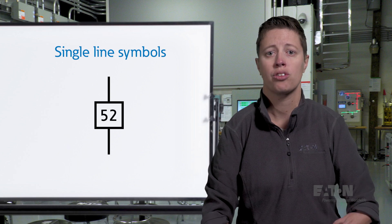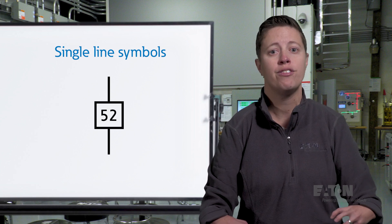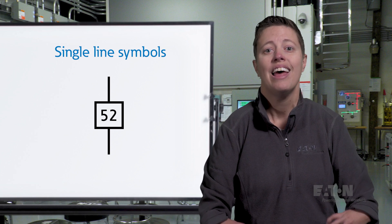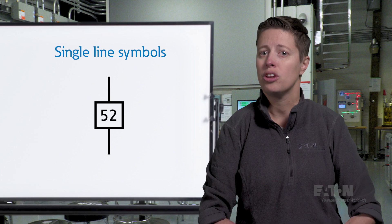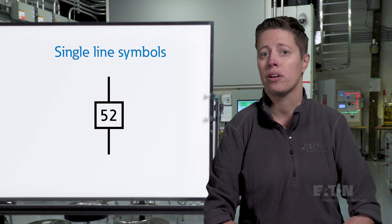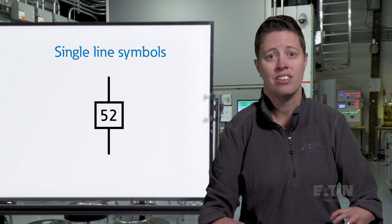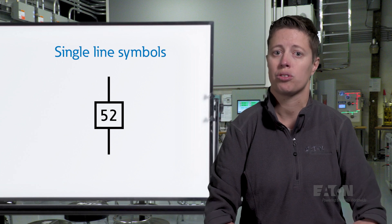When looking for circuit breakers, always keep an eye out for the number 52 on the single line. This is the ANSI device number for a circuit breaker and is often used as an abbreviation. It is one of many abbreviations designated by ANSI standards used on electrical drawings.